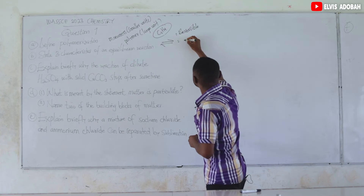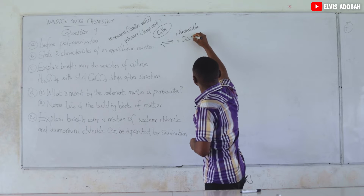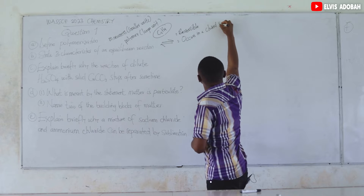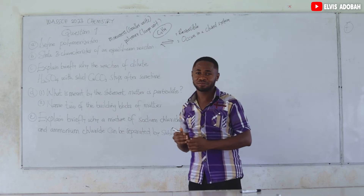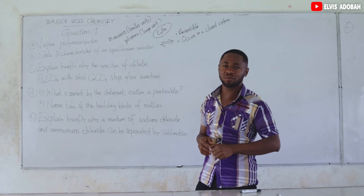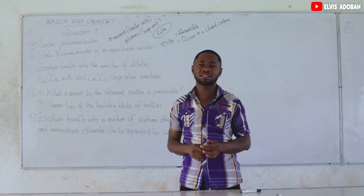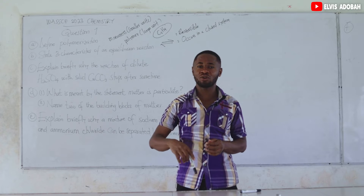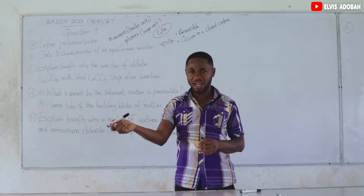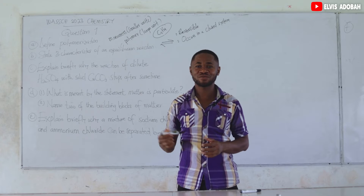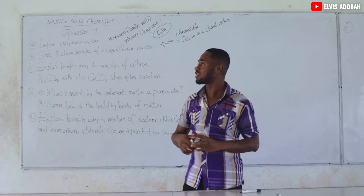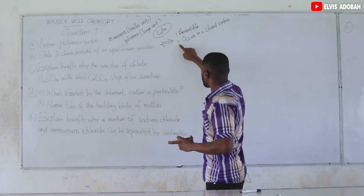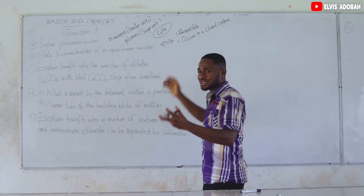Characteristic two: the reaction occurs in a closed system. A closed system means matter cannot come in and matter cannot leave, but energy can come in and energy can leave. That is a closed system.